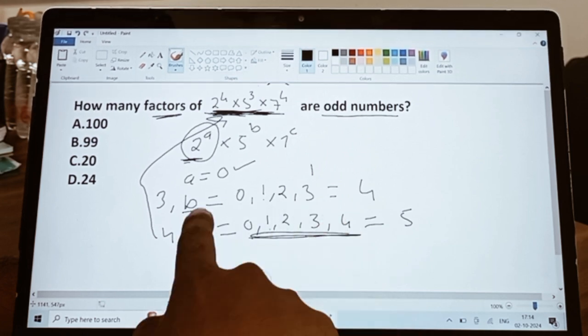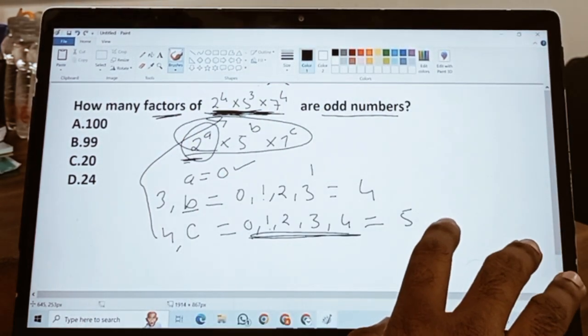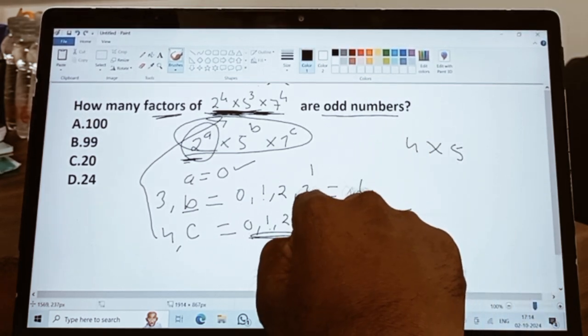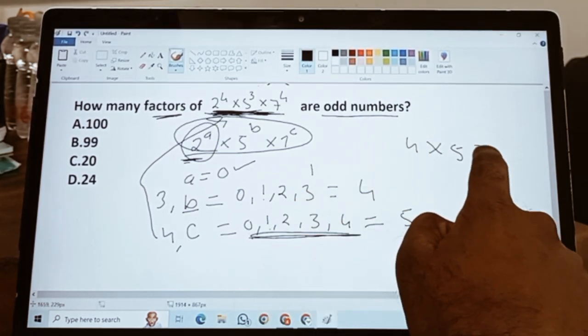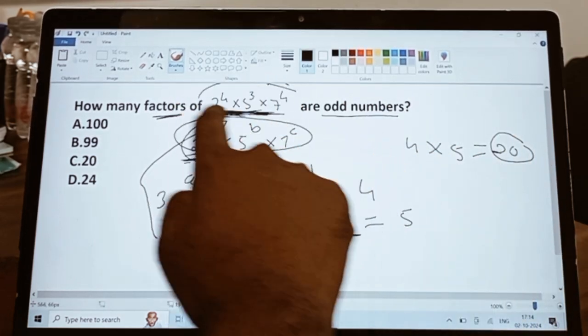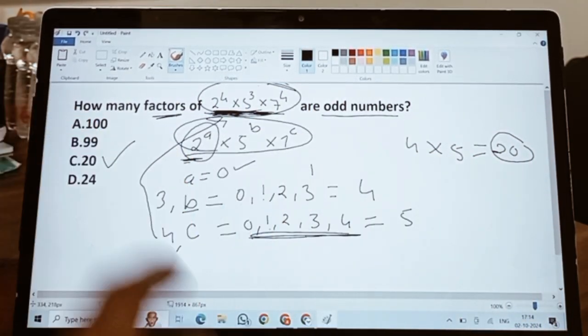So after multiplying 4 into 5—4 numbers from b and 5 numbers from c—you will get 20 possible odd numbers which will be factors of this particular product. So in that case, your option C will be the correct answer.